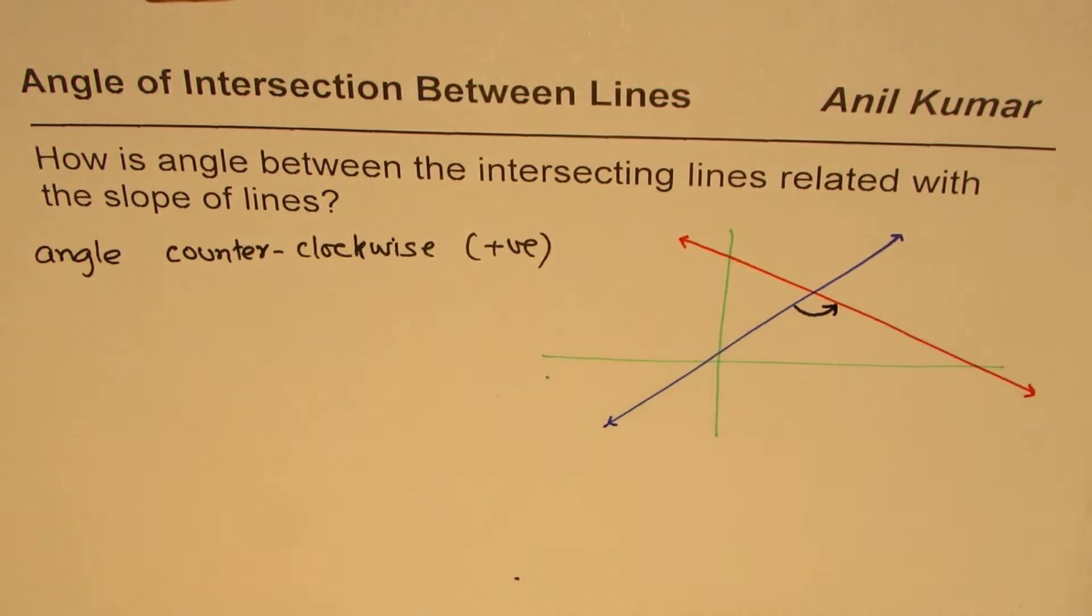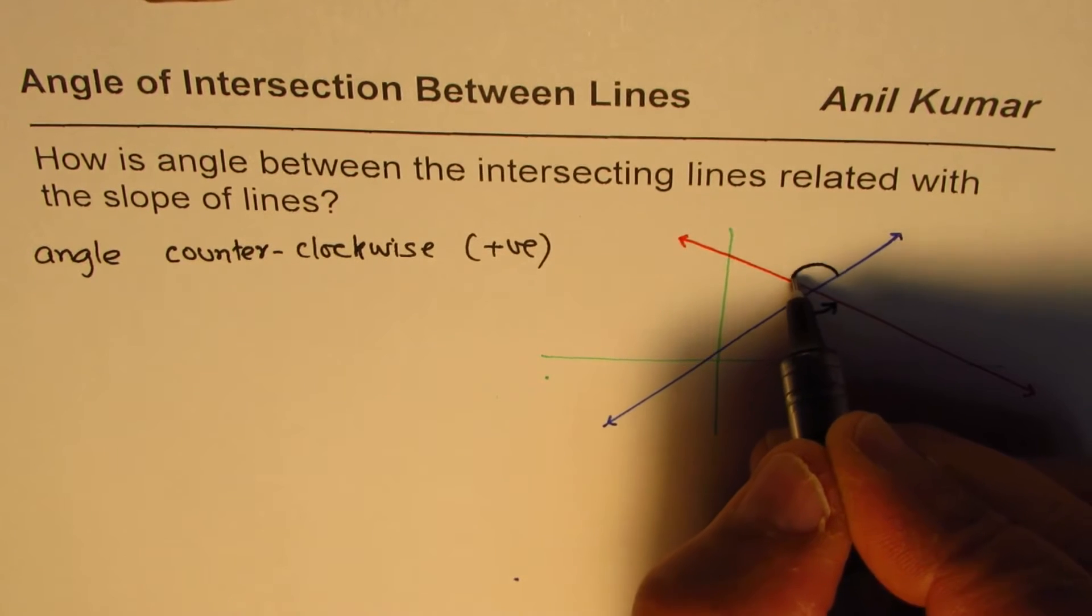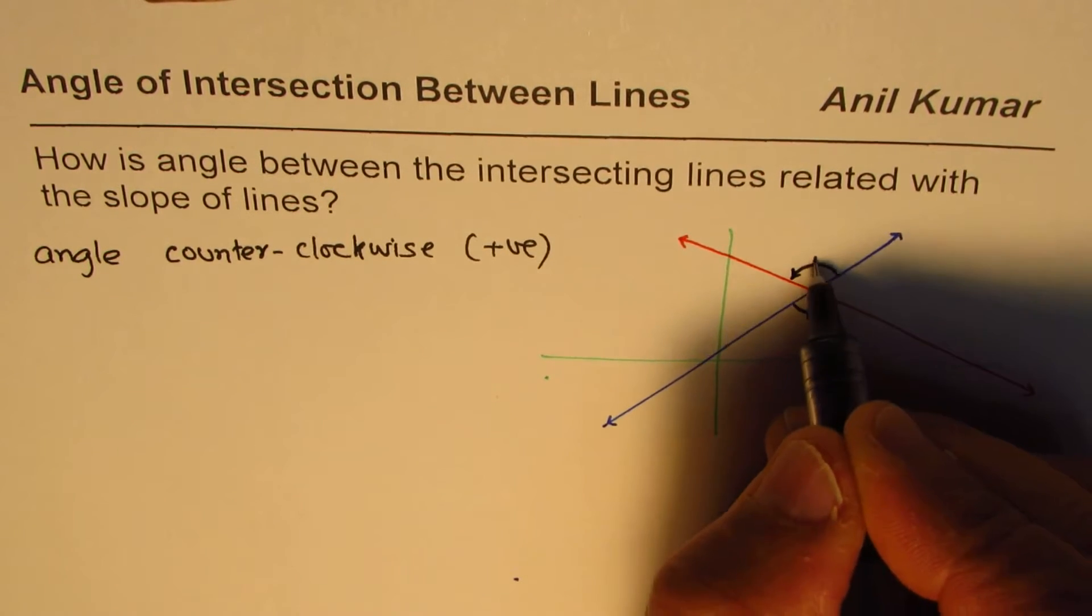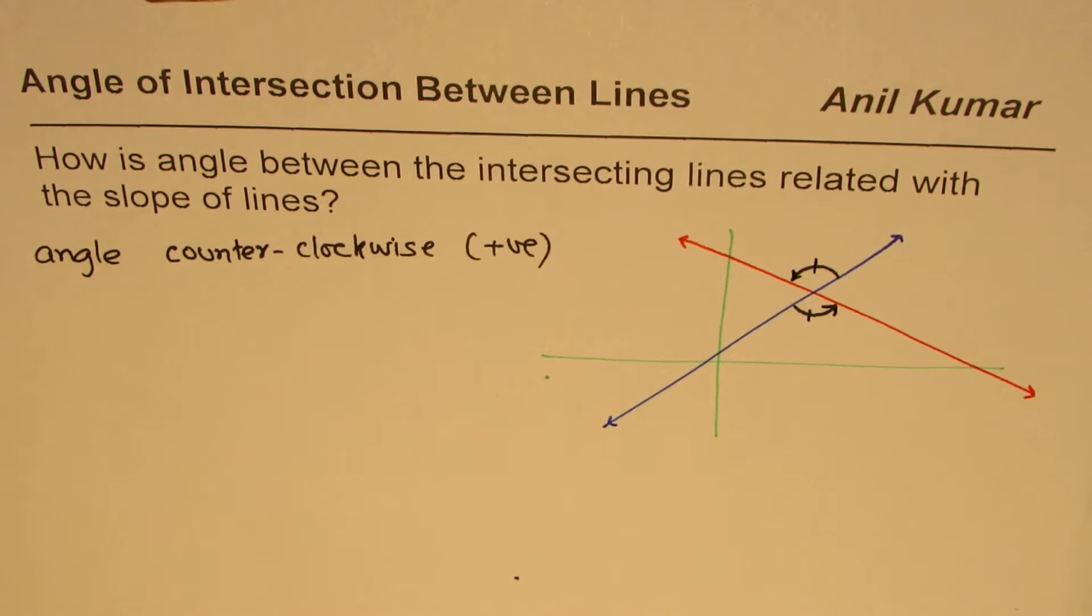So that is the counterclockwise angle which we are trying to measure and this is definitely equal to this angle also. So these two angles are equal, these are the angles which lines are making with one another which we are interested in finding at present.